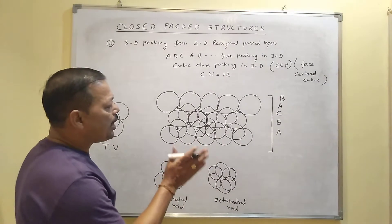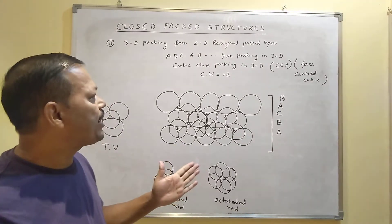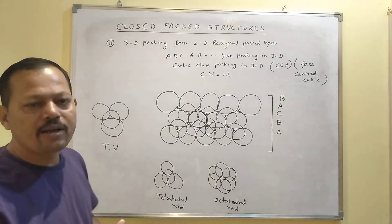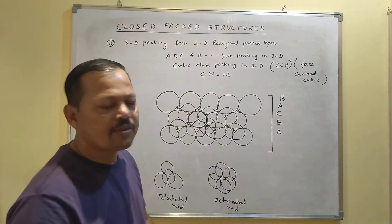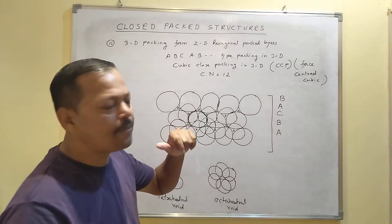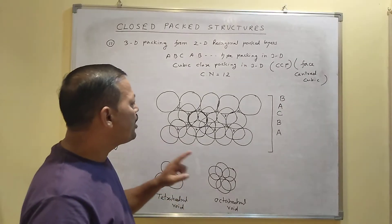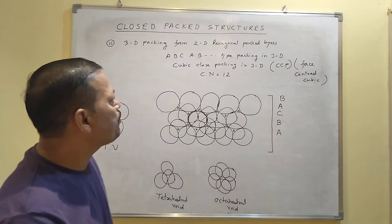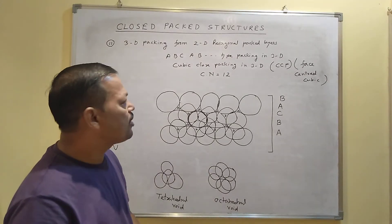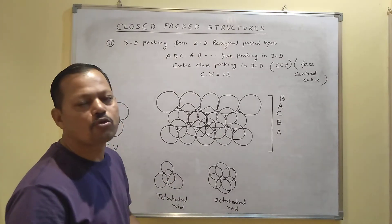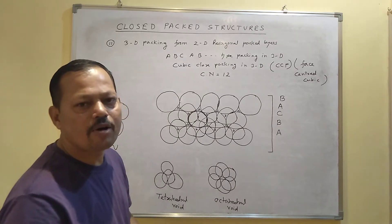There are three types of packing in 3D. When you make 3D packing from 2D square-packed layers, the packing is called simple cubic packing. When you make 3D packing from 2D hexagonal packing, you get two types: ABAB type, also called hexagonal close packing (HCP), and ABCABC type with the third layer above the octahedral void, called cubic close packing (CCP) or face-centered cubic. In both HCP and CCP, the coordination number is 12, while in simple cubic it was 8.